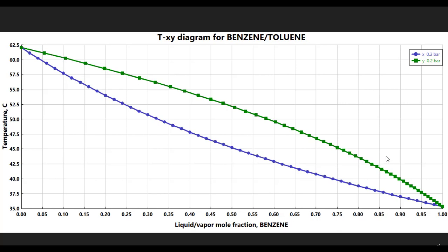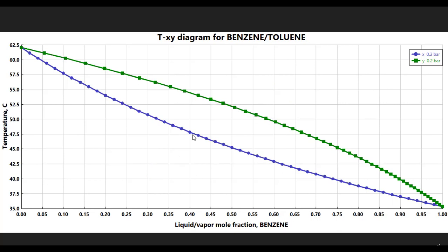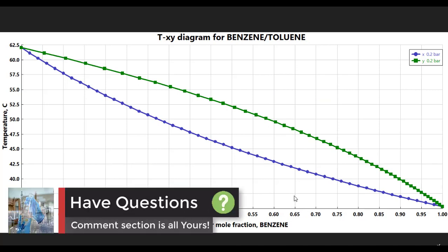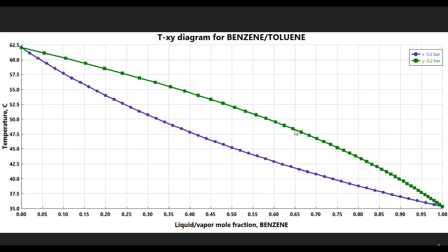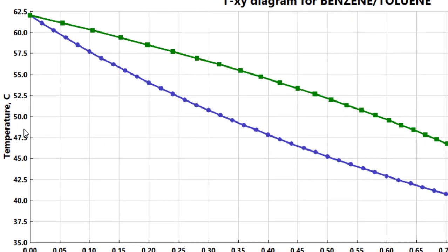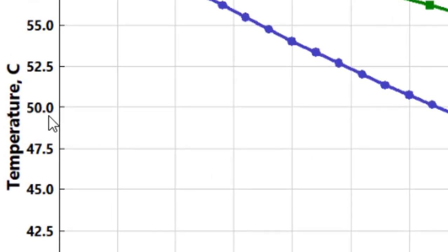The system pressure is 150 mmHg, which corresponds to 0.2 bar, as shown in the legend. The green line corresponds to the vapor phase and the blue line corresponds to the liquid phase. For our specified mole fraction of benzene, which is 0.65, if we move upward to the green line corresponding to vapor, we can read the temperature from the y-axis. According to this figure, the temperature is between 47.5 and 50 degrees Celsius.